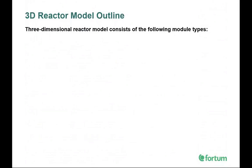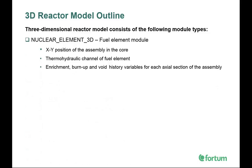APROS VI offers an extensive variety of 3D reactor core model types. There are four essential module types in the APROS VI library that must be defined to create a new 3D reactor core model. The first is Nuclear Element 3D, a module you configure for fuel elements by specifying fuel element position in the core, reactor channel to hold fuel elements, enrichment, and so on.